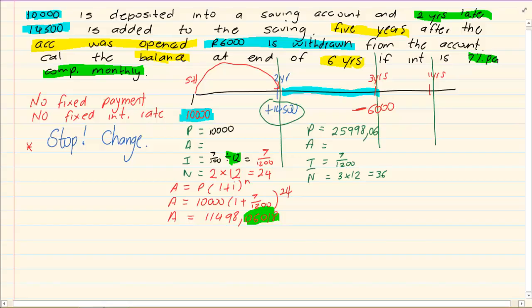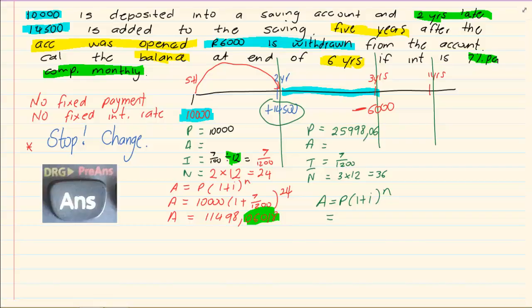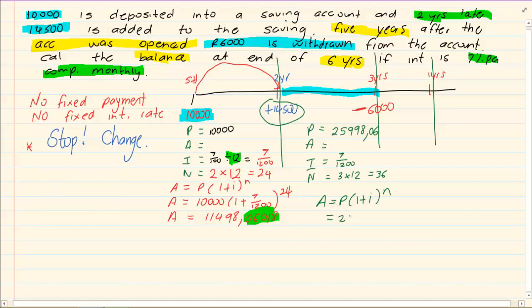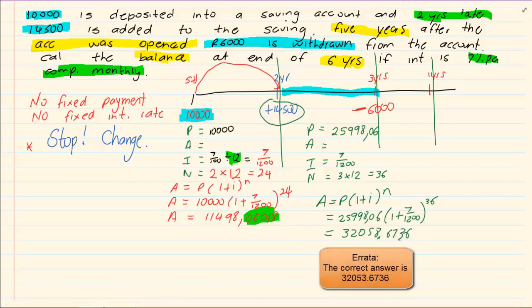Now you are going to do the formula again. So we have A is equal to P, 1 plus I to the power of N. And you are going to simply substitute. Now what you must get used to is... You see this P. In your calculator it is already stored. So you must start using that answer button. You mustn't re-type in this 25,998,06. It must simply be already in your calculator. That would give you 32,058,67.